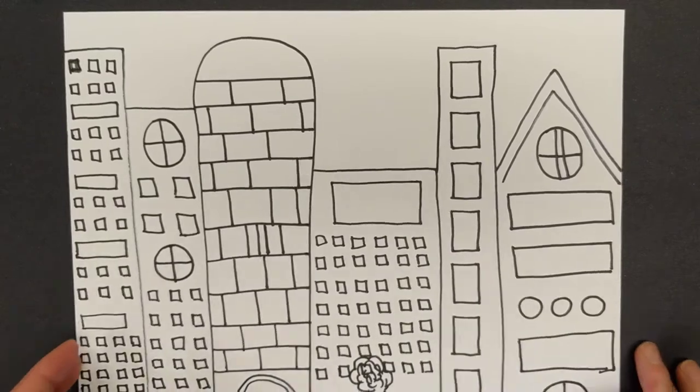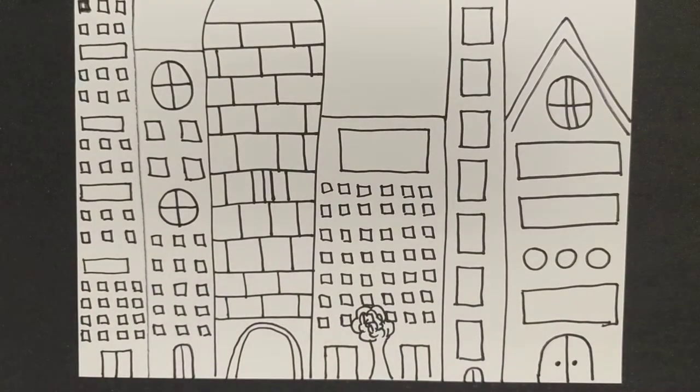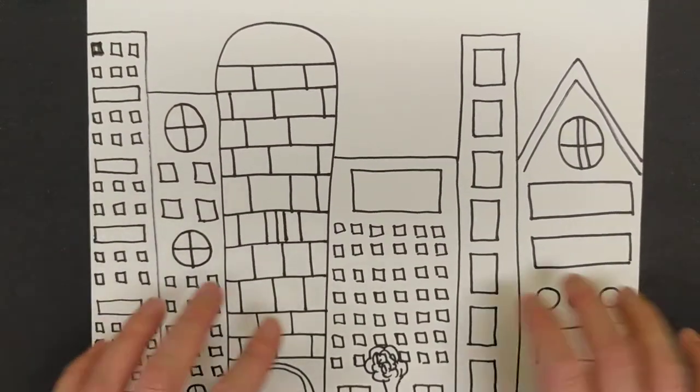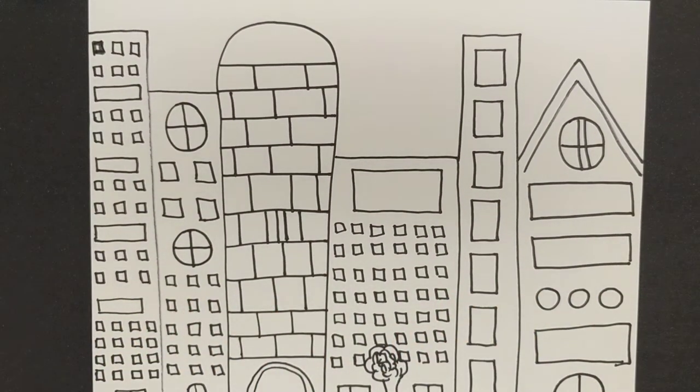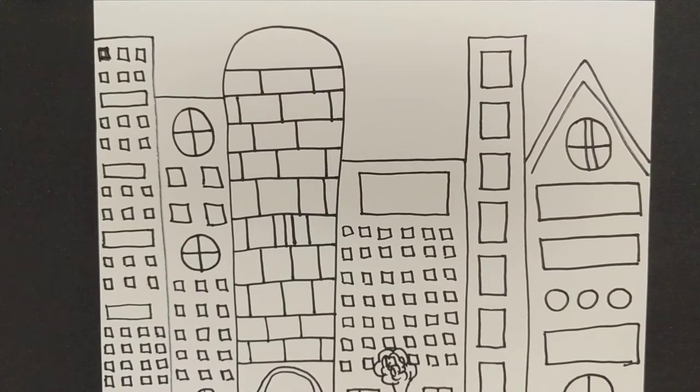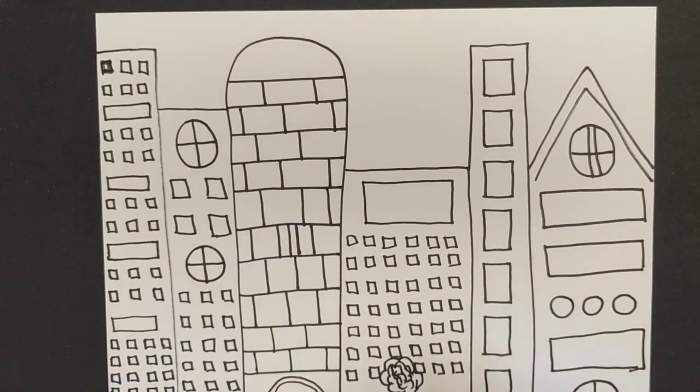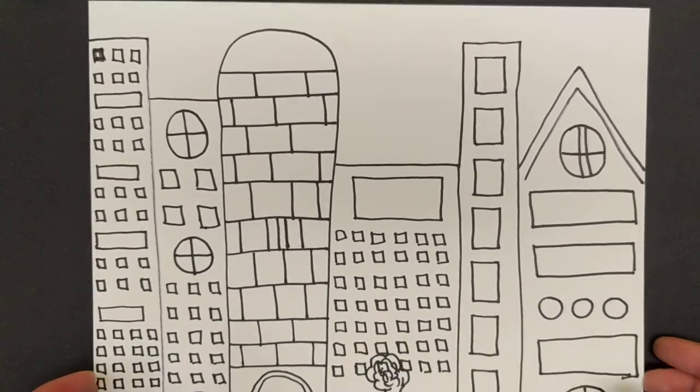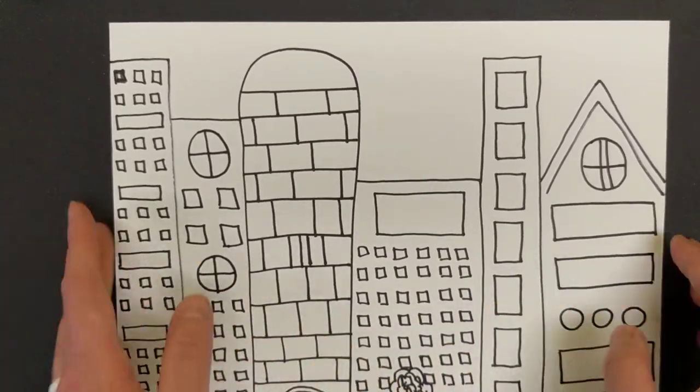All right, so as you can see we have our cityscape, and this might take you a while to work on. It takes a lot of effort to make those little boxes. You can also, if you're lacking inspiration or if you're not quite sure where to start, do a simple Google image search for different cityscapes. You can find cities from around the world with all different beautiful buildings and interesting shaped buildings. So all right, we have our cityscape done.